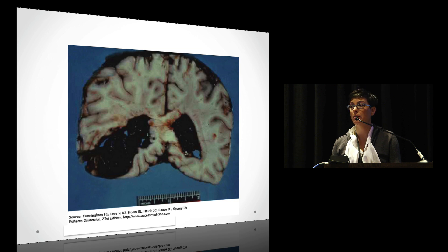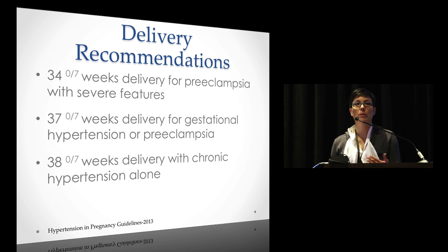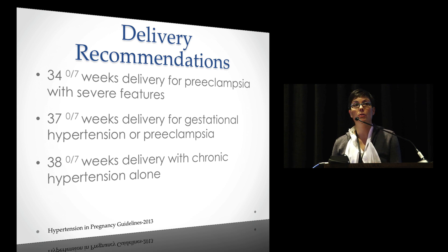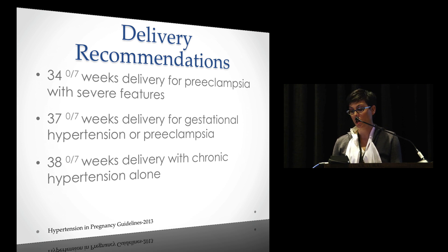This is what we want to prevent — an actual case of a woman who had a hypertensive crisis with preeclampsia. For delivery recommendations, there's still debate among obstetric groups about delivery of gestational hypertensives or preeclamptics at 37 weeks. Preeclampsia with severe features will prompt earlier induction thinking. Gestational hypertension delivery at 37 weeks, and chronic hypertension alone will start being induced at 38 weeks. We will see these women coming in more frequently.